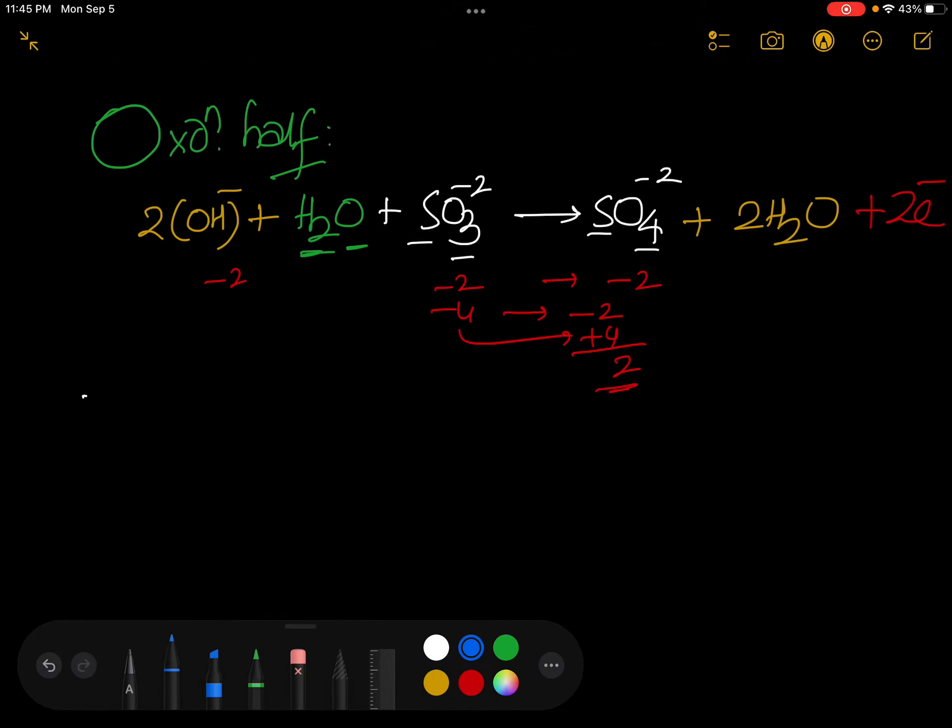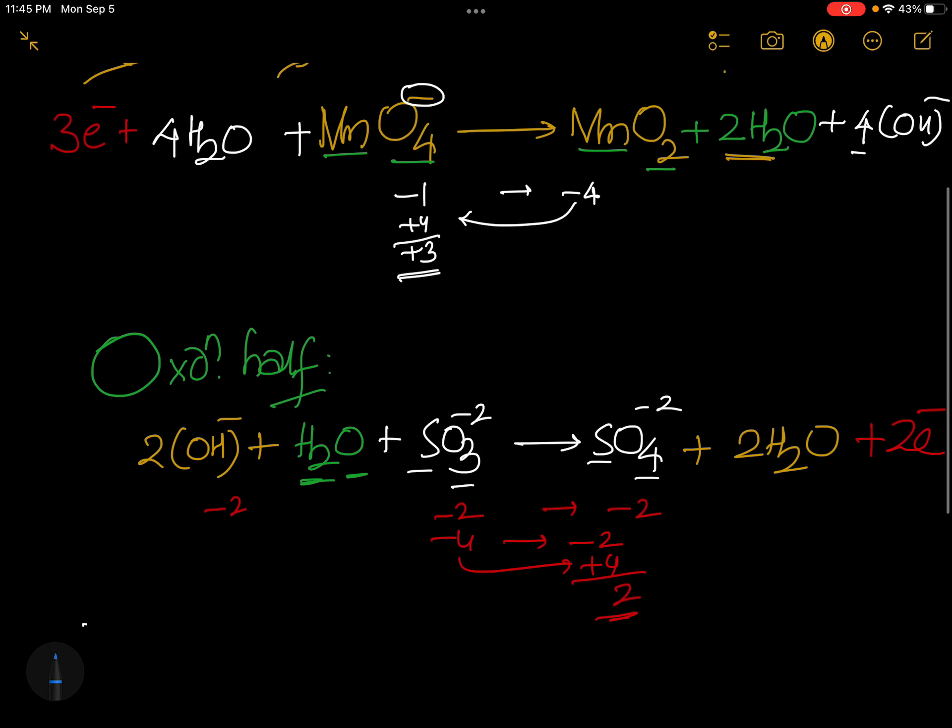Correct? Now, in this expression 2 and here 3. 2 electrons here, 3 electrons here. So multiply by 2 and 3. And write the expression. That's enough.